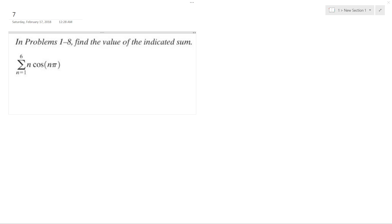Alright, so we want to find the indicated summation from n equals 1 up to 6 for n times cosine of n pi. So starting off, we're going to start off with n equals 1.